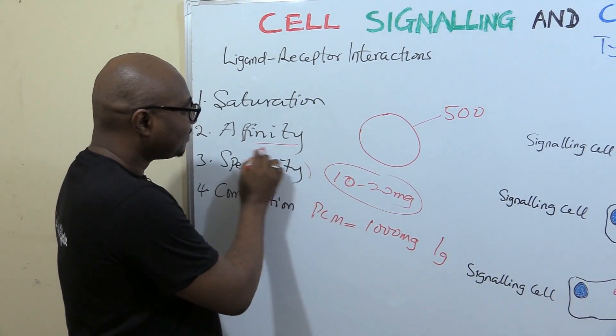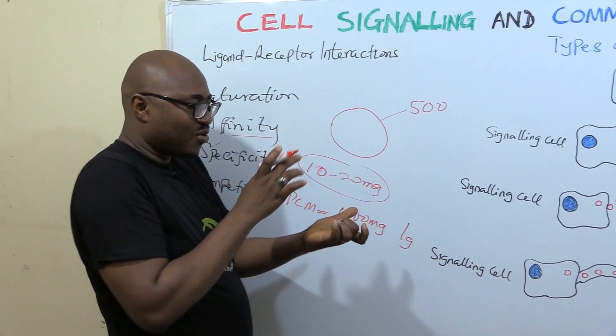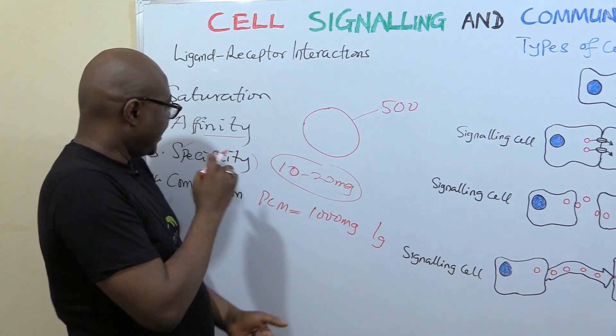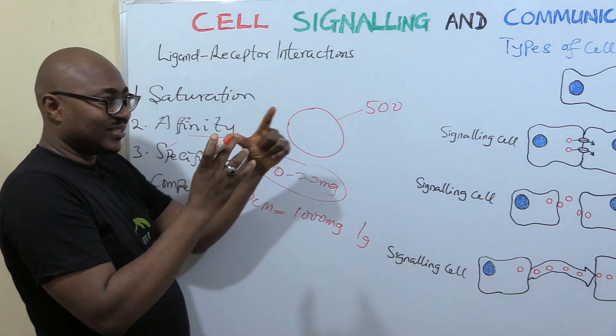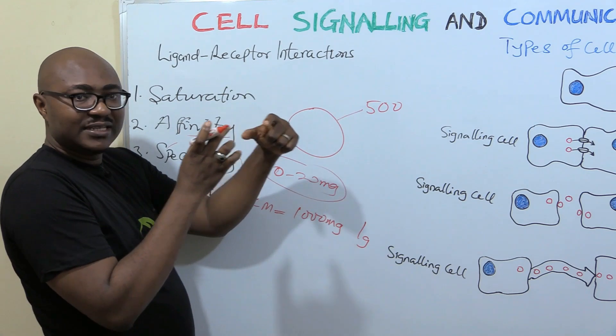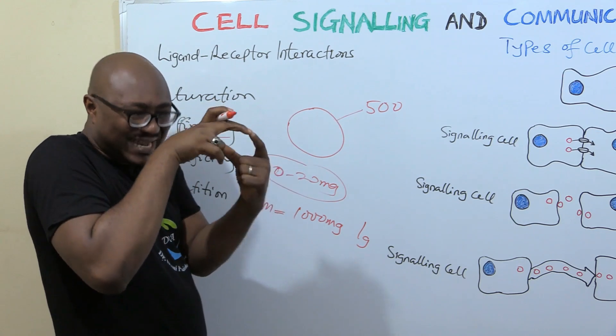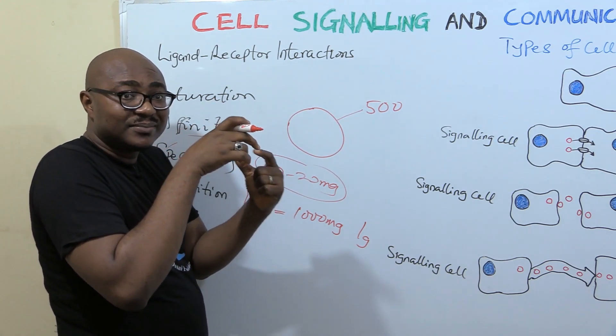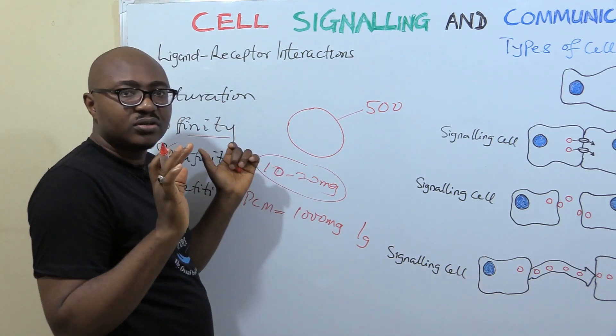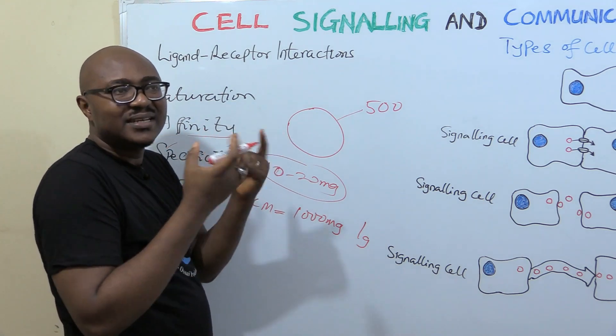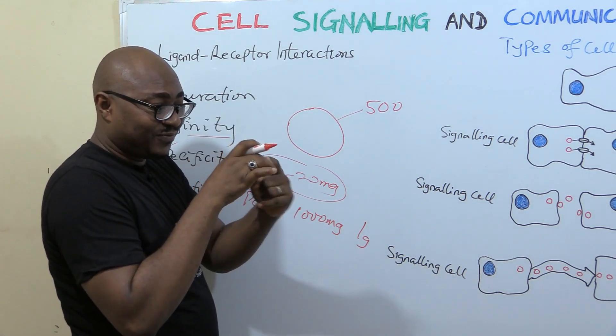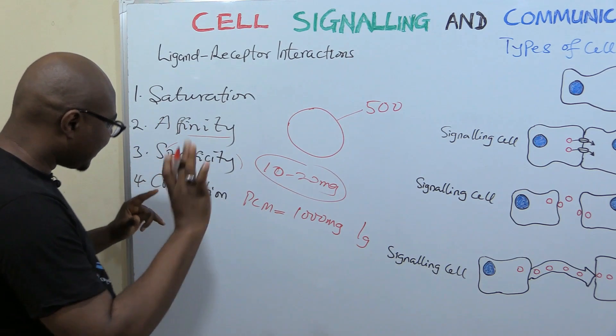Specificity has to do with how exact a receptor is to the ligand. If a ligand is coming that does not match exactly the receptor, nothing will work, even if it resembles it a little but does not exactly fit into it. That's the specificity, that's easy to understand.